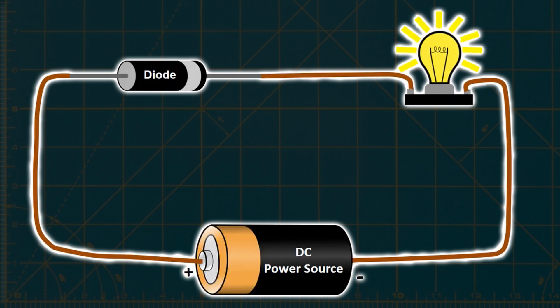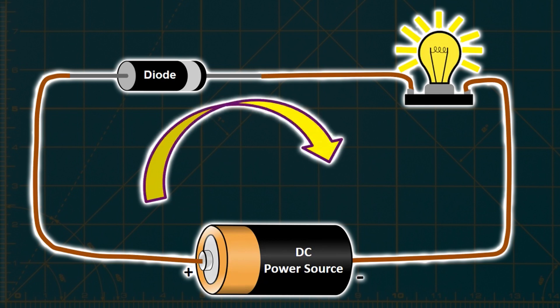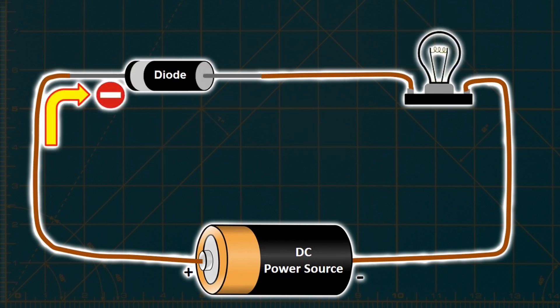To illustrate this, when the diode is connected with the flat side facing forward, the lamp will light up as the current flows through the circuit. However, if we connect the diode in reverse, no current will flow, and the lamp will not light up.